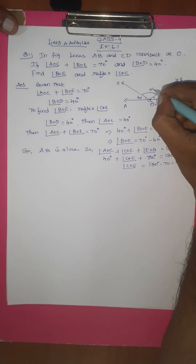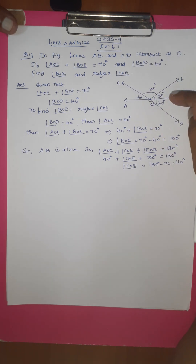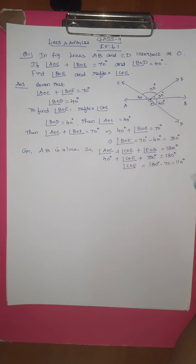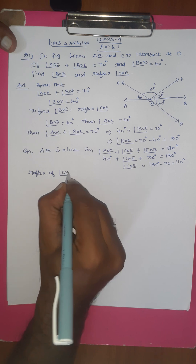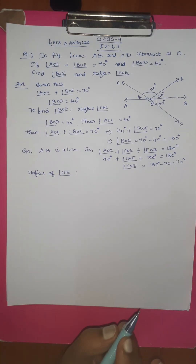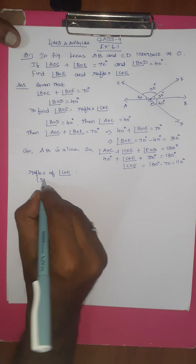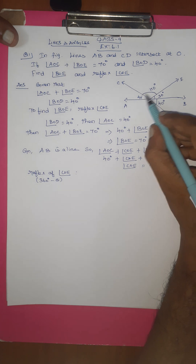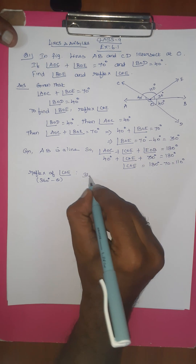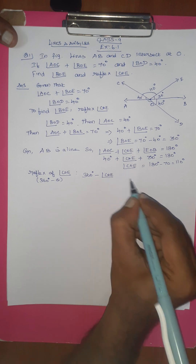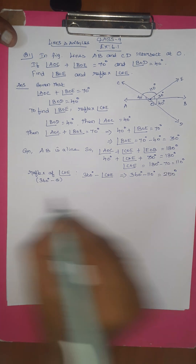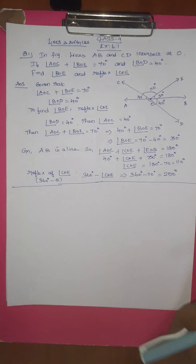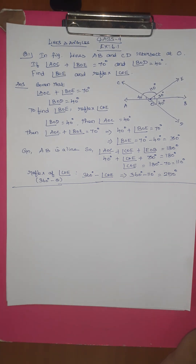COE is 110 degrees. Now, reflex angle of COE equals 360 degrees minus COE. Since COE is 110 degrees, reflex angle of COE equals 360 minus 110 equals 250 degrees. So reflex angle of COE is 250 degrees.